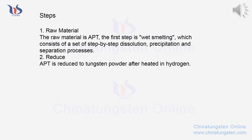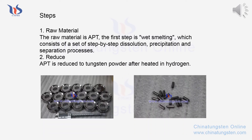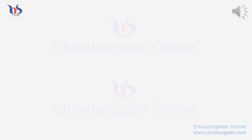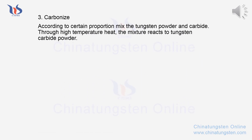Step 2 - Reduce: APT is reduced to tungsten powder after being heated in hydrogen. Step 3 - Carbonize: According to a certain proportion, the tungsten powder and carbide are mixed. Through high temperature heat, the mixture reacts to form tungsten carbide powder.